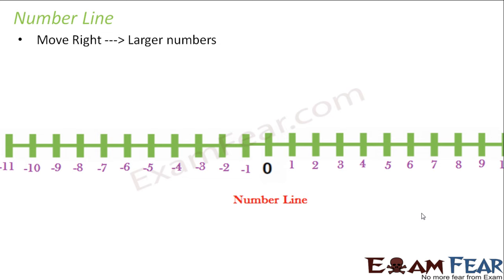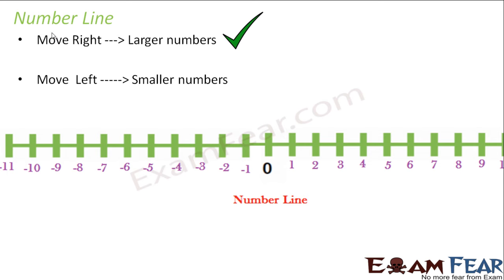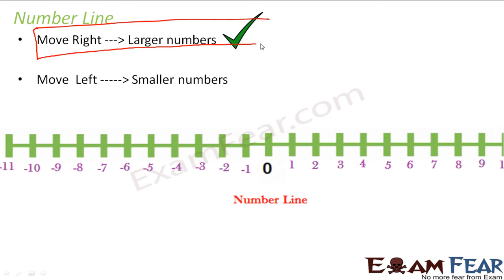As you move right, you move towards the larger numbers. And that actually means as you move left, you are going to move towards the smaller numbers. That's quite obvious. So just with this simple logic, you should be able to compare all types of integers. If you just remember that moving right means moving towards larger numbers, this will help you to distinguish between any two numbers — which is greater, which is smaller.